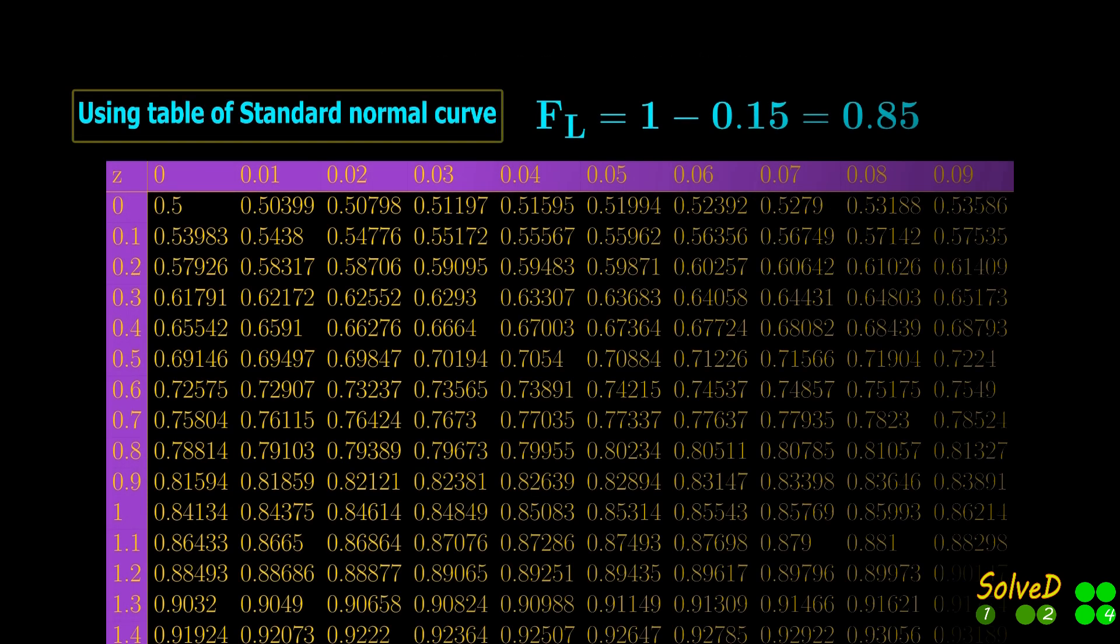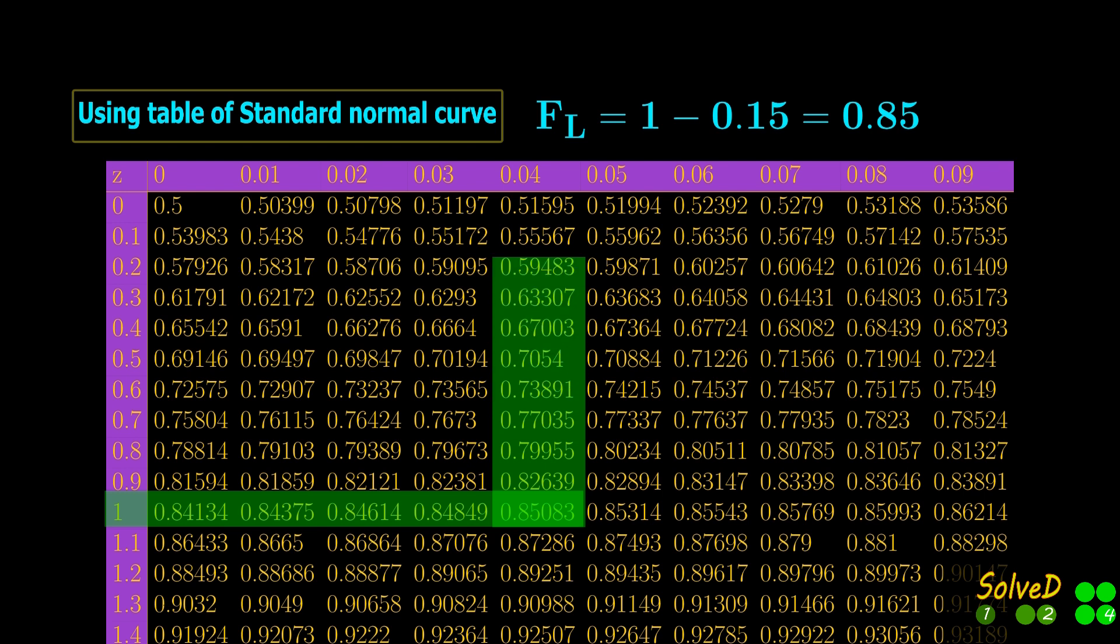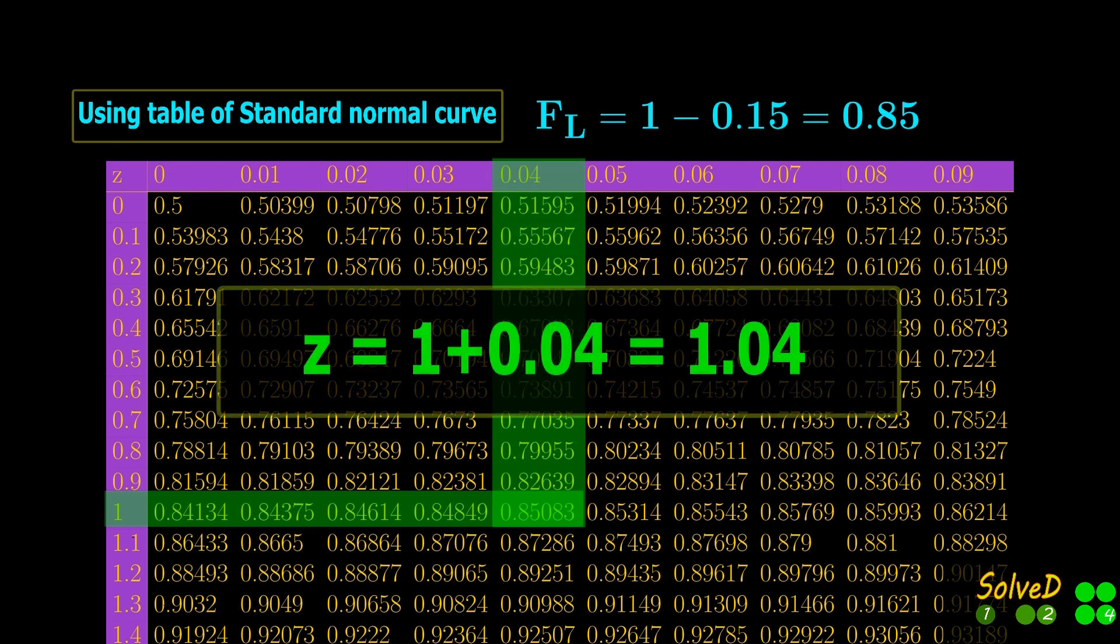Now, find the value of Z using the table of standard normal curve. Locate the nearest value to 0.85, and add corresponding readings from the first column and the first row as shown.